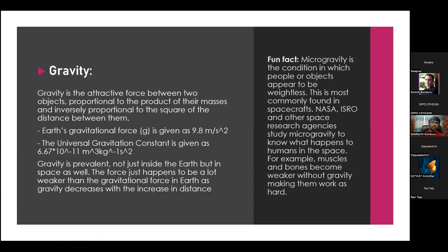Let's talk about gravity. Gravity is the attractive force between two objects, proportional to the product of their masses and inversely proportional to the square of the distance between them. Earth's gravitational constant G is 9.8, and the universal gravitational constant is 6.67 × 10⁻¹¹ m³ kg⁻¹ s⁻². Newton first discovered gravity upon observing an apple fall from a tree. Many people think there is no gravitational force in space, but that is not true — gravity is present everywhere in the universe, just much weaker than Earth's.